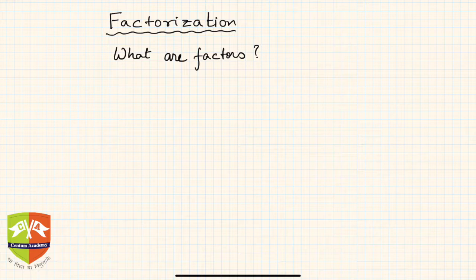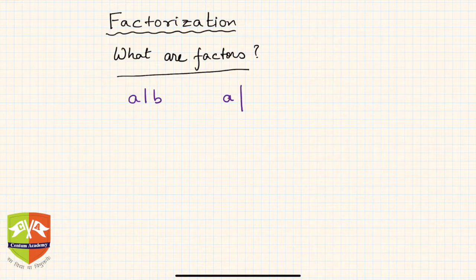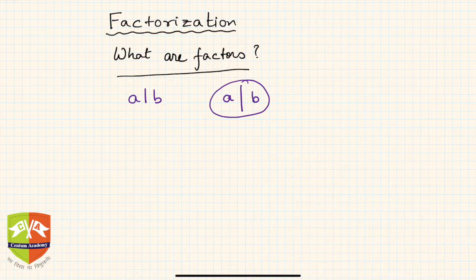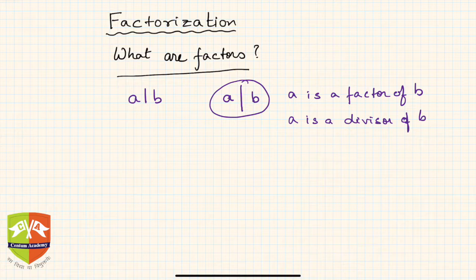Before we start, let us have a recap of what factors actually are. In mathematical language, we say that a is a factor of b — written with a vertical bar notation as a|b — which is read as 'a is a factor of b', 'a is a divisor of b', or 'a divides b'.